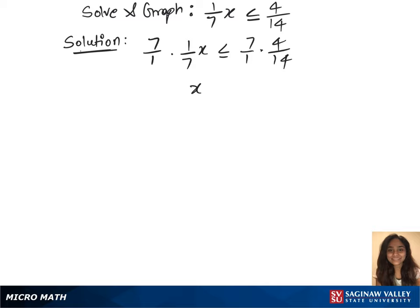And in the next step, we have x less than or equals to 4 over 2, and that gives us x less than or equals to 2.